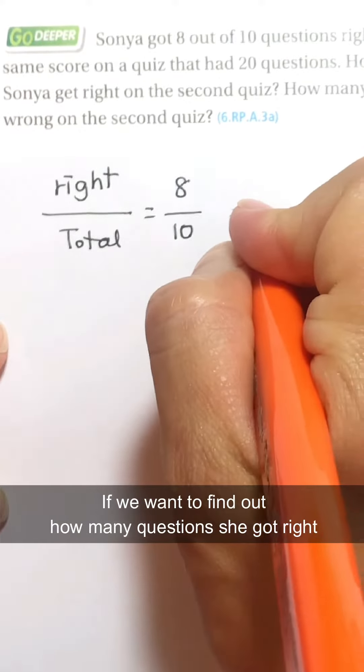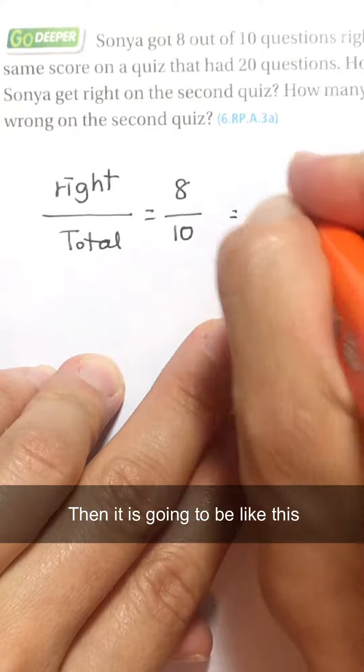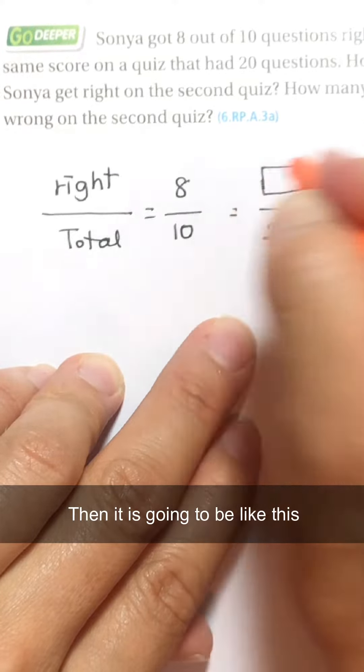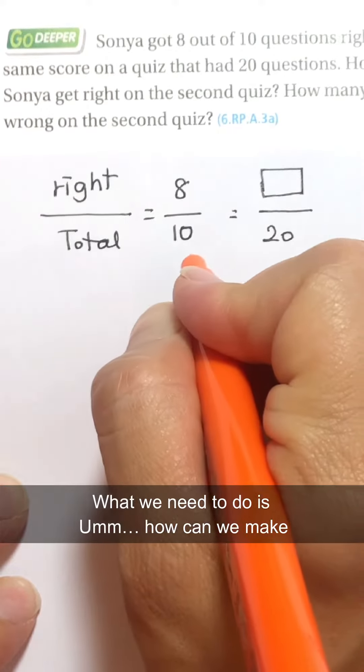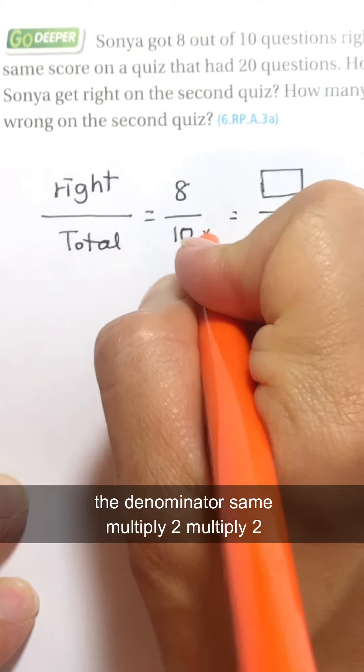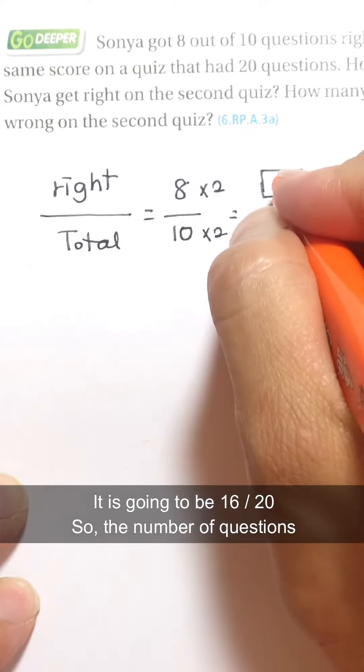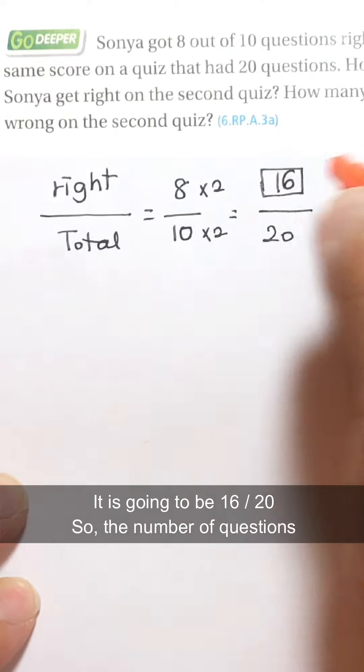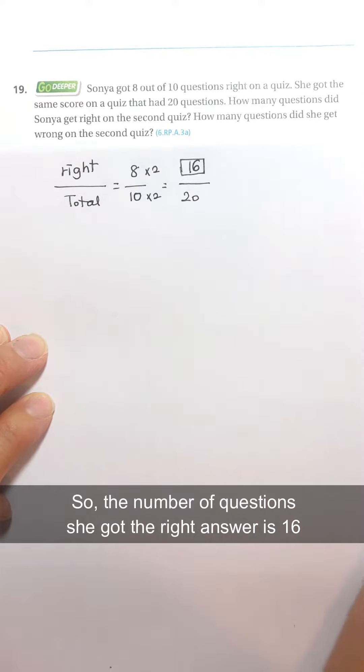If we want to find out how many questions she got right, then it is going to be like this. And what we need to do is, how can we make denominator same? Multiply 2, multiply 2. So it is going to be 16 over 20. So the number of questions she got right is 16.